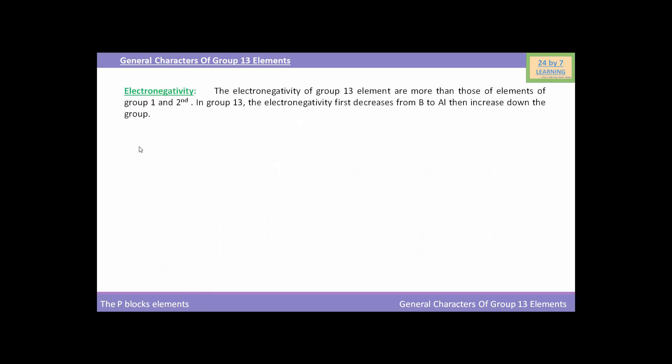Now, we will see the electronegativity of group 13 elements. The electronegativity of group 13 elements are more than those of elements of group 1 and 2. In group 13, the electronegativity first decreases from boron to aluminum and then increases down the group.